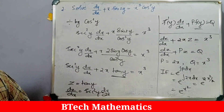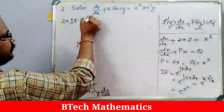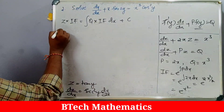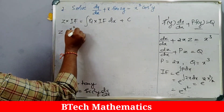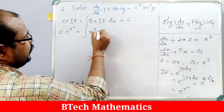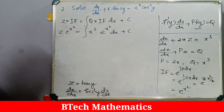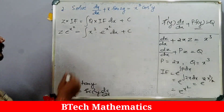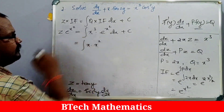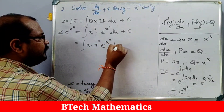The solution is: z·e^(x²) = ∫x³·e^(x²) dx + C. To evaluate the integral, we rearrange x³ as x·x², so the integral becomes ∫x·x²·e^(x²) dx. We substitute t = x², giving dt = 2x dx, so x dx = dt/2. The integral becomes (1/2)∫t·e^t dt.